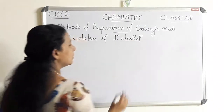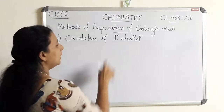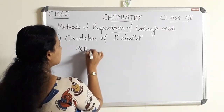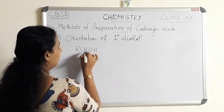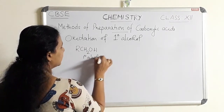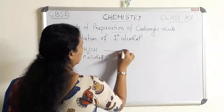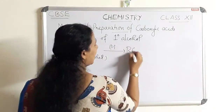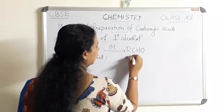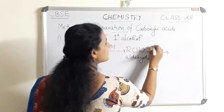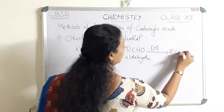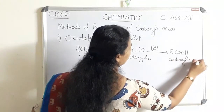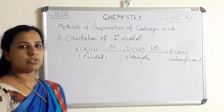Primary alcohol can be oxidized to carboxylic acid. The general formula of primary alcohol is RCH2OH. On oxidation, with nascent oxygen, it gives RCHO — this is an aldehyde. Further oxidation gives the corresponding carboxylic acid, RCOOH. This is the general format of oxidation of primary alcohols.